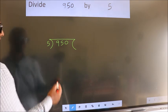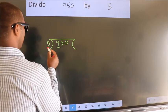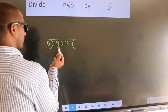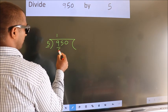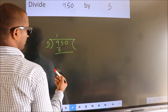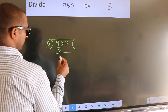Next, here we have 9. Here 5. A number close to 9 in the 5 table is 5 once 5. Now, we should subtract. We get 4.